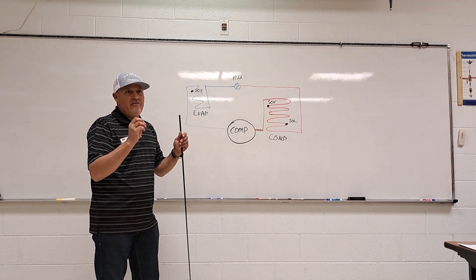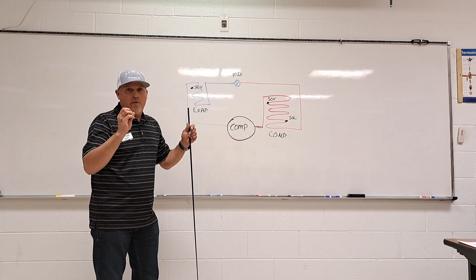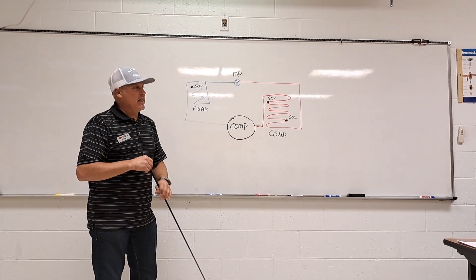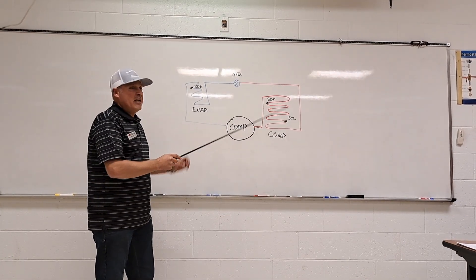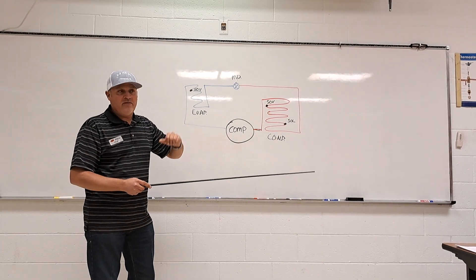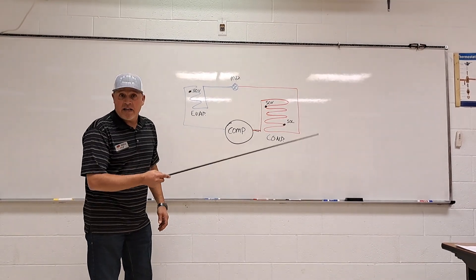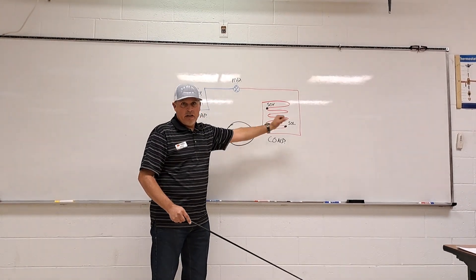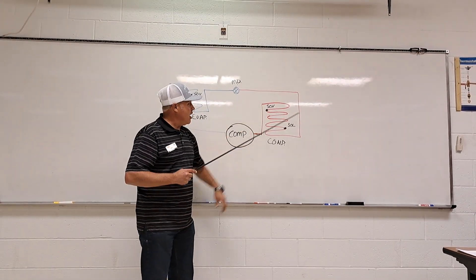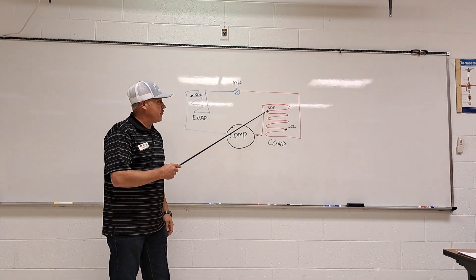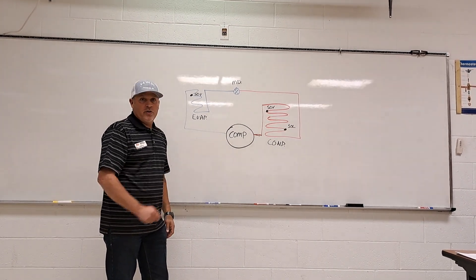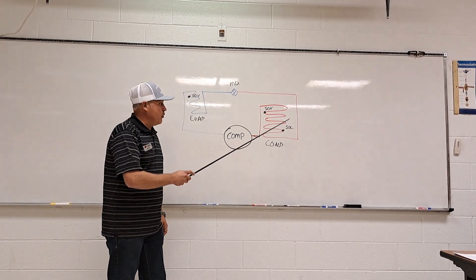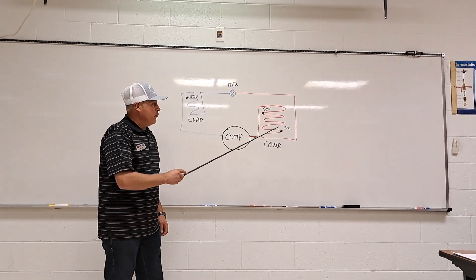A way to look at that is it's a very saturated foggy day or morning where with any cooling of temperature it will start to rain. So in the condenser, we are giving up latent heat causing the refrigerant to change from a vapor to 100% liquid. At this point, saturation point of liquid, we will begin to subcool.